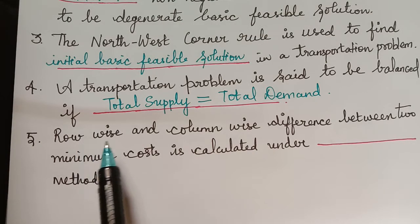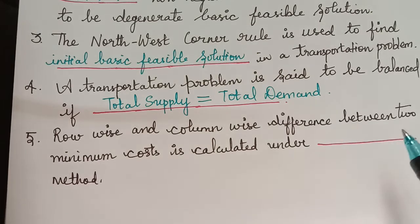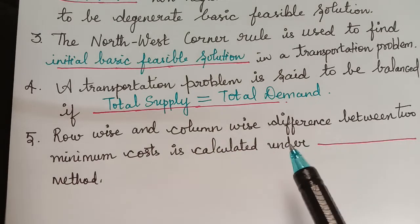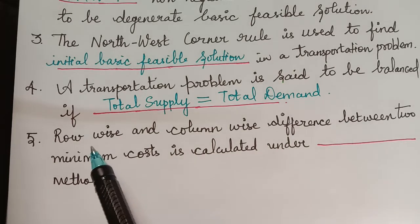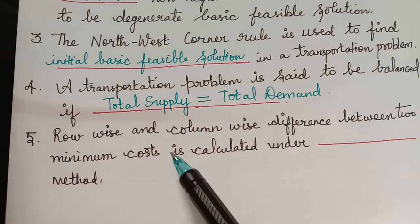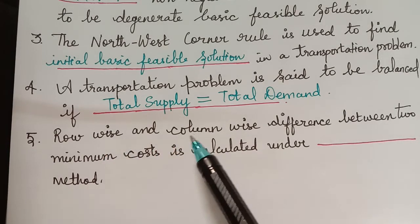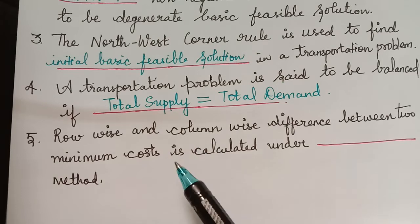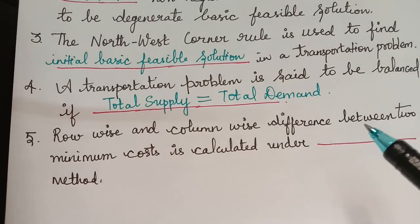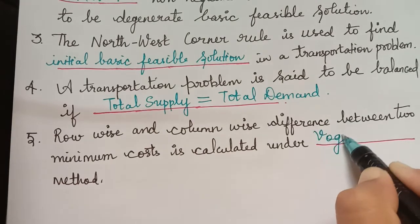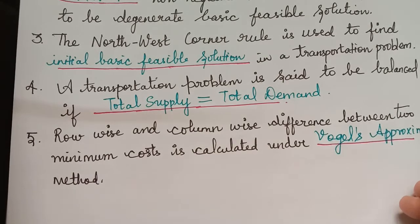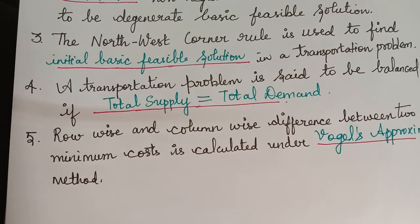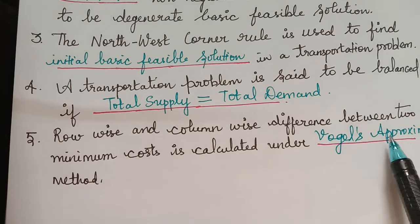The next question is: row-wise and column-wise difference between two minimum costs is calculated under the dash method. In Vogel's Approximation Method, we find the penalty by taking the difference between the two minimum costs, row-wise and column-wise. The answer is Vogel's Approximation Method, also known as VAM.